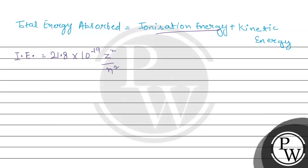For the hydrogen atom, Z (the atomic number) is 1 and n is 1, representing the ground state shell. Using this, the ionization energy is 21.8 × 10⁻¹⁹ × (1²/1²) = 21.8 × 10⁻¹⁹ joules. This is the ionization energy we need to compare against the total energy absorbed.